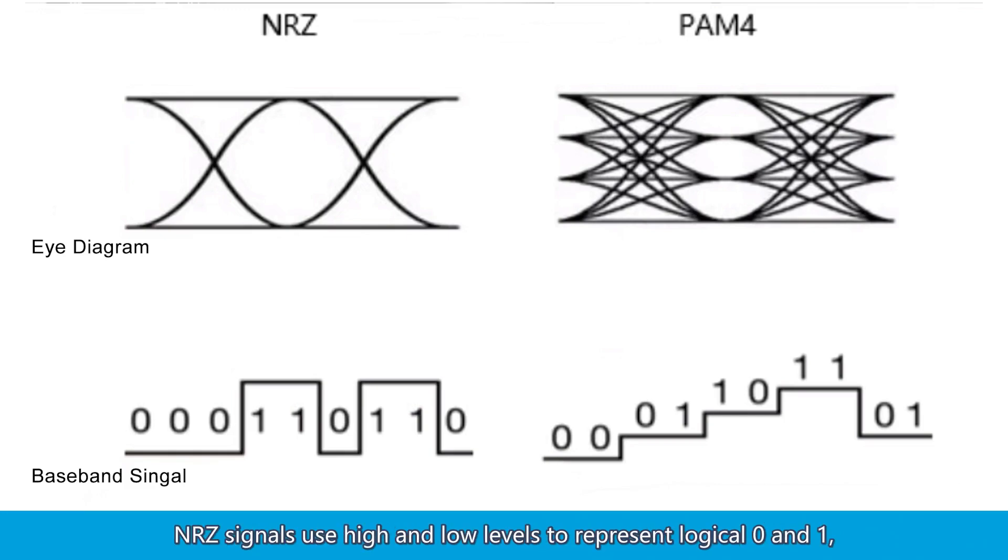NRZ signals use high and low levels to represent logical zero and one, transmitting one bit of logical information per cycle. In contrast, PAM-4 signals use four different levels, 00, 01, 10, 11, to transmit two bits of information per cycle.